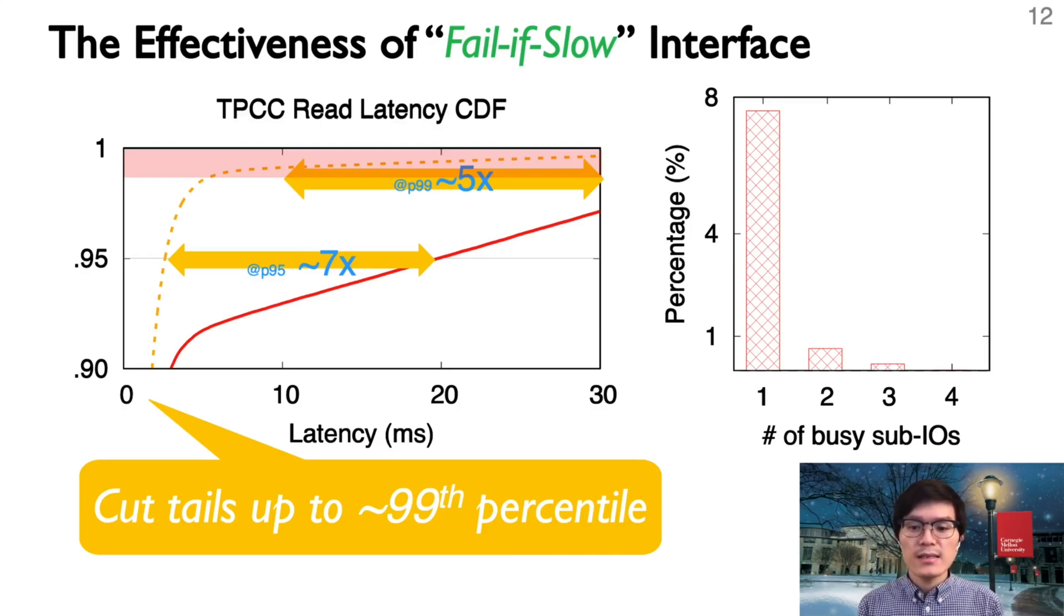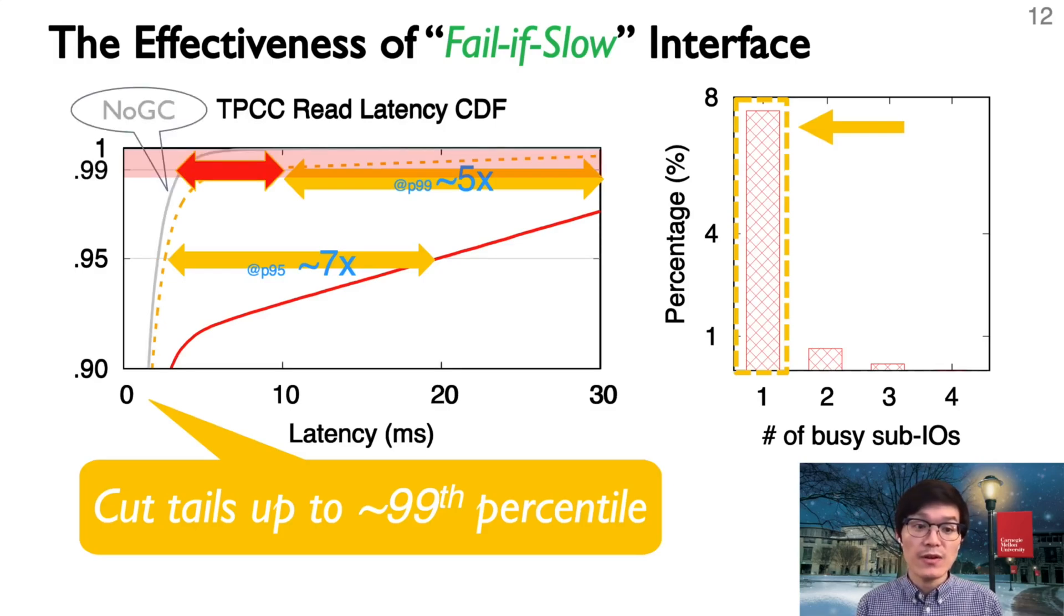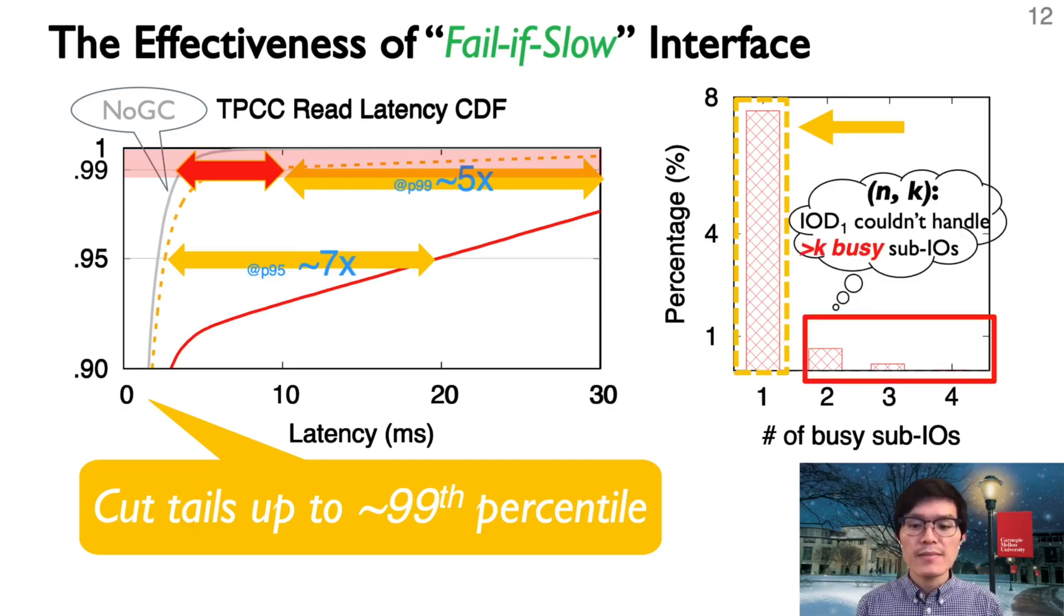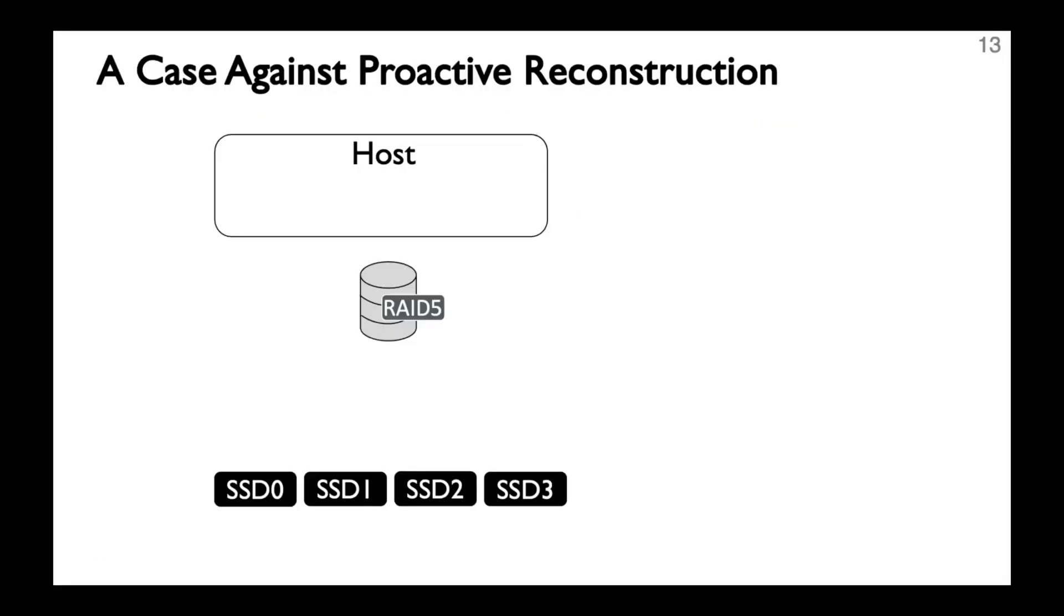On the right, we show the percentage of IOs experiencing different number of concurrent GCs. For example, if X equals to two, the bar represents the number of IOs experiencing two concurrent GCs. We observe that the fast-fail interface can only help with IOs experiencing one GC. That's why we still see a gap towards the no GC ideal performance. In general, given K parity blocks associated with N data blocks, we can only tolerate K sub-IOs. For RAID5, K equals to one.